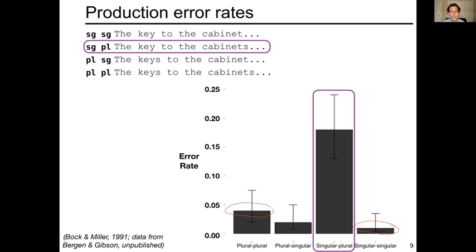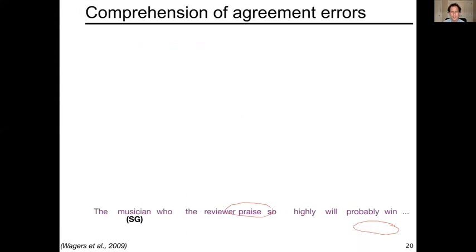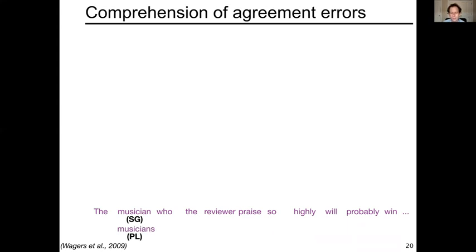Subject-verb agreement has also been studied in human language comprehension. Here's an example sentence read word by word in a self-paced reading paradigm: 'The musician who the reviewer praised so highly will probably win.' This is ungrammatical — the verb 'praise' is plural but its subject is 'reviewer,' so it should be 'praises.' However, if you change the number marking on 'musician' to 'musicians,' making it 'The musicians who the reviewer praised so highly will probably win,' this may not sound so bad anymore. We'll see quantitative evidence of this pattern in human language processing.